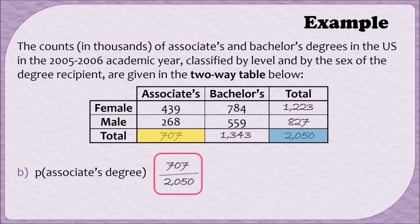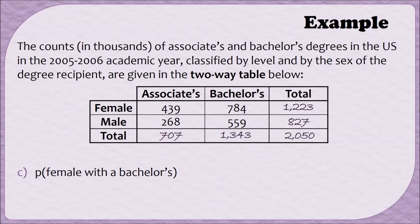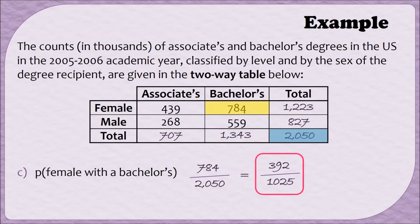In this example, we need to find the probability of finding a female with a bachelor's degree. Unlike parts A and B, in this part we're given two pieces of information about the person—they need to be both female and have a bachelor's degree. That means they have to be in the row for female and in the column for bachelors. The place where this row and column intersect gives us 784. So there were 784 people who were female and also had a bachelor's degree, making that our numerator over 2,050. Both numbers are even, so we can divide both by 2 to get 392 over 1,025.